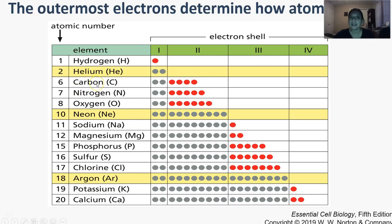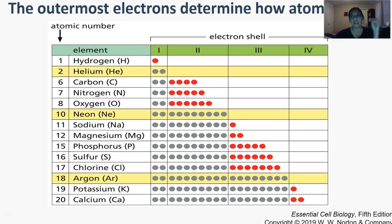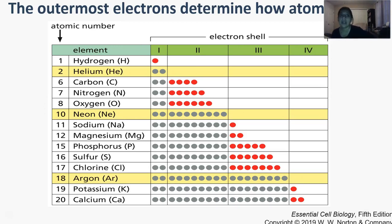Carbon is special because it has a half-full outer shell — it has four electrons and it can have another four. That gives it a lot of possibilities: it can lose four or gain four to get to a stable state. So it has a lot of options for interactions. It can make up to four bonds, and that makes it a very versatile molecule and hence probably the molecule of choice in these biological systems.